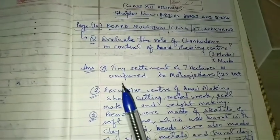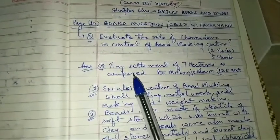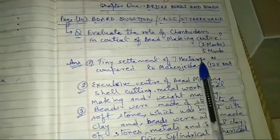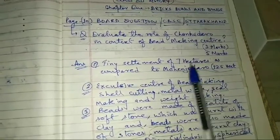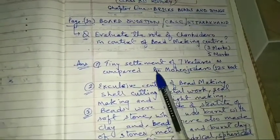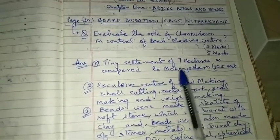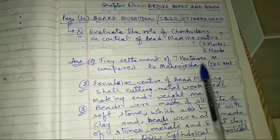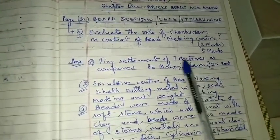So we start with this. Chanudaro is a tiny settlement of 7 hectare as compared to Mohenjo-daro. Chanudaro was a 7 hectare settlement while Mohenjo-daro was 125 hectare. It was a small settlement.